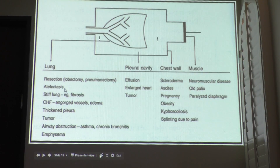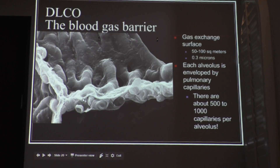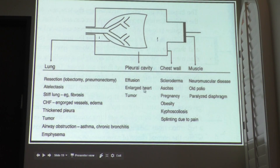From the lungs: lobectomy or pneumonectomy, severe atelectasis, any stiff lung. There's a condition called lupus lung or rheumatoid arthritis lung — these patients have stiffness and decreased compliance. Also, thickening of the pleura, tumor, obstruction in the airway, and emphysema. In the pleural cavity, you can have an effusion or a very enlarged heart compressing the lungs, or a pleural tumor. The most tested pleural tumor on your boards is mesothelioma, and the exposure is related to asbestos.